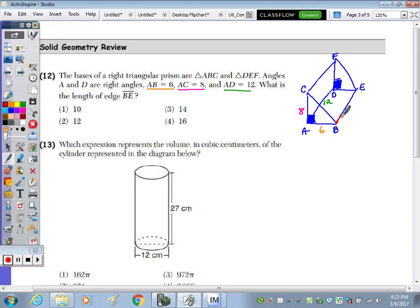Well, BE is a lateral edge, and all the lateral faces are rectangles. So this is a rectangle here on the back, ACFE is a rectangle, and then on the right side here, FCE is a rectangle. Since all the lateral faces are rectangles, each lateral edge is congruent. So if this is 12, C to F is also 12, and B to E is also 12.